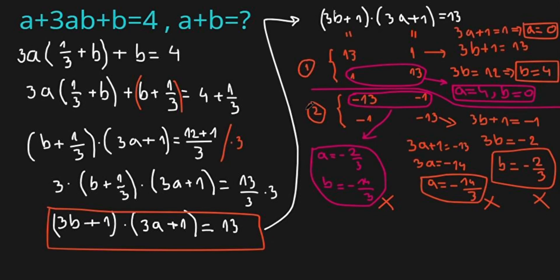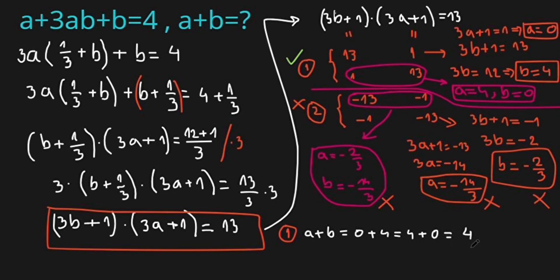So the valid answers come from the positive cases. From either (a, b) = (0, 4) or (4, 0), we get a + b = 4. Our correct answer is 4. Please don't forget to like the video and subscribe to the channel. Thank you for watching, and we'll see you next time.